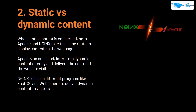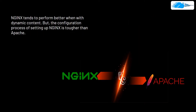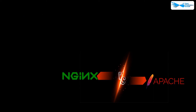Next, static versus dynamic content. For static content, both Apache and Nginx take the same route to display content on the web page. For dynamic content, Apache handles it directly and delivers it to the visitor, whereas Nginx has to rely on different programs like FastCGI and WebSphere. Nginx can perform well with dynamic content, but the configuration process for setting it up is tougher than Apache's, so there is no clear winner in this category.